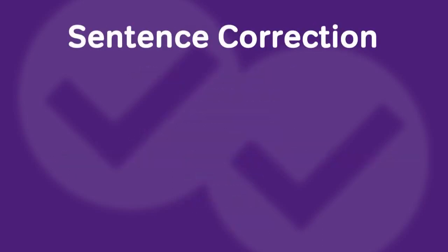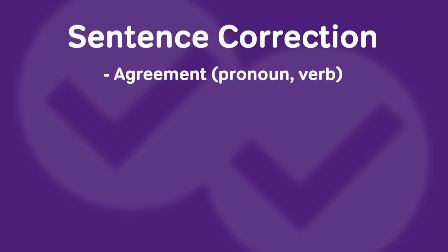Moving on to sentence correction — this section has less obvious question types, but there are things we should be prepared to be tested on. The first is agreement: whether the number between nouns and pronouns or nouns and verbs agrees — is everything singular or everything plural? We're also going to want to be prepared for verb tense: does the time of the verb make sense, and does it align with other verbs in the sentence or fit the timeline established by the sentence?